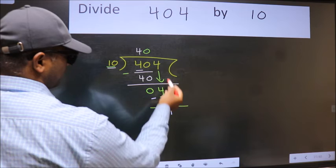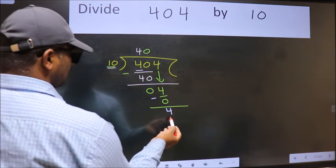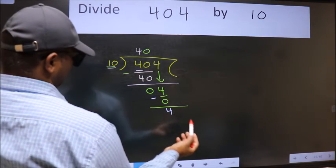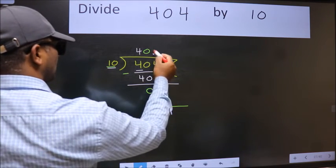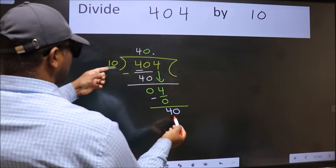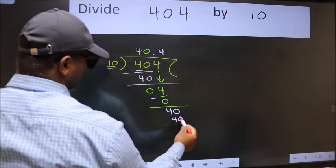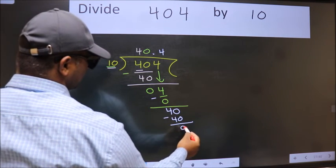Over here, we did not bring any number down. And 4 is smaller than 10. So now we can put dot and take 0. So 40. When do we get 40 in 10 table? 10 times 4 is 40. Now we subtract. We get 0.